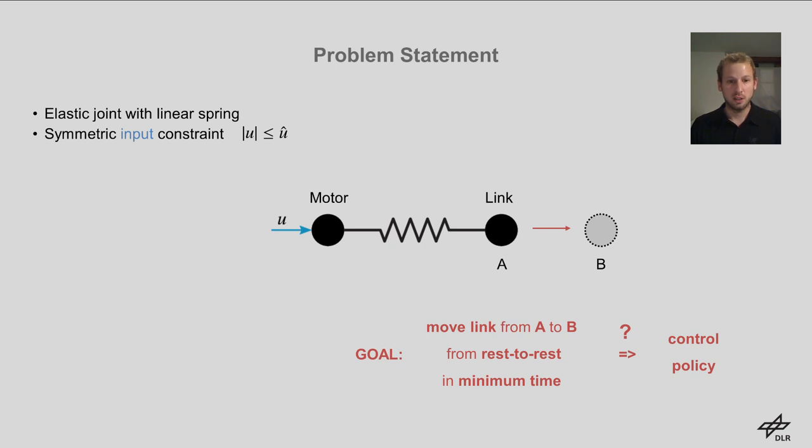let us assume that we face symmetric input constraints and that we want to move the link from point A to point B from rest to rest in minimum time. The question is, how do we choose our control policy to achieve this goal?